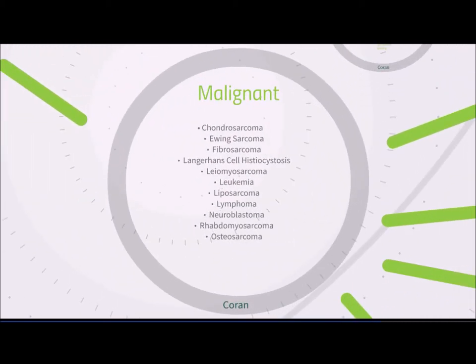Moving into malignant chest wall tumors — most malignant tumors of the chest wall in pediatrics are sarcomas, including chondrosarcoma, Ewing sarcoma, fibrosarcoma, osteosarcoma, and rhabdomyosarcoma. Treatment is ultimately surgical resection. It is important to assess the number of ribs that need to be resected by imaging, because resection of five or more ribs can significantly impair chest wall function, requiring careful individual perioperative planning depending on tumor location and ribs involved.